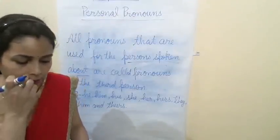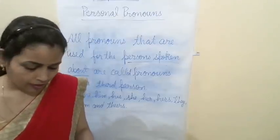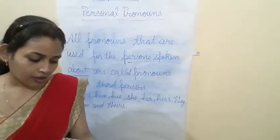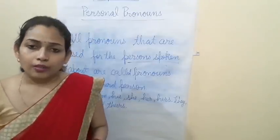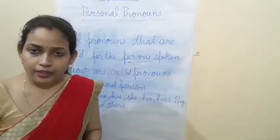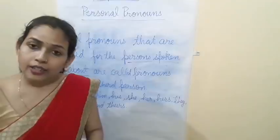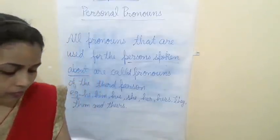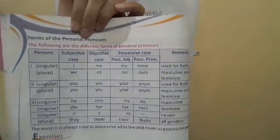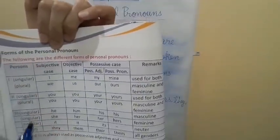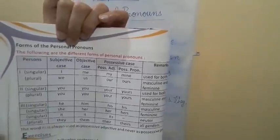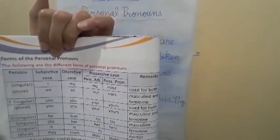Open page number 44 — 'Forms of Personal Pronoun'. There is a chart given with singular and plural. The chart shows persons, subjective case, objective case, possessive case — possessive adjective and possessive pronoun — which will be studied in detail in a separate chapter. Remarks: 'I' is used for both masculine and feminine; 'you' is used for both.